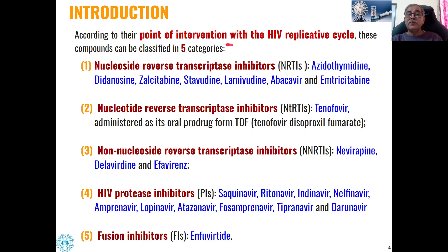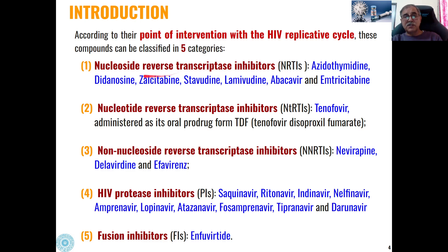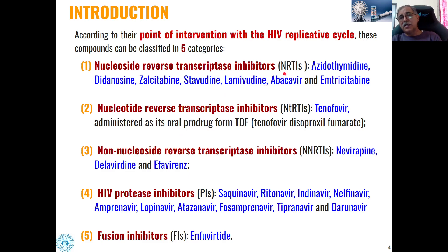According to the point of intervention with the HIV replication cycle, we can use different types of anti-HIV or antiviral compounds. They can be divided into five categories. The first is nucleoside reverse transcriptase inhibitors. They will act as inhibitors of reverse transcriptase and their structure will generally include a nucleoside-type structure. Common examples of such anti-HIV agents are zidovudine, didanosine, zalcitabine, stavudine, lamivudine, abacavir, and emtricitabine — all commonly used NRTIs.